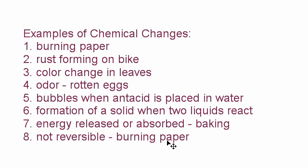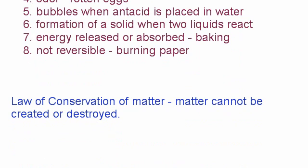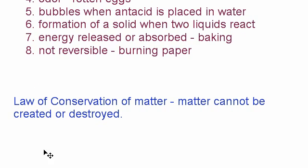In a chemical change, reversibility is not easy — if I burn a piece of paper I can't take the ash and turn it back into paper. The last thing we'll talk about is the law of conservation of matter: matter cannot be created or destroyed. If I put two bananas in a blender to make a smoothie, although the bananas are blended, the mass before and after blending should be the same — that's what conservation of matter means.